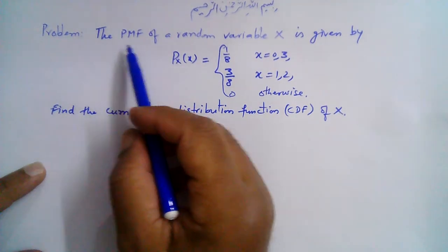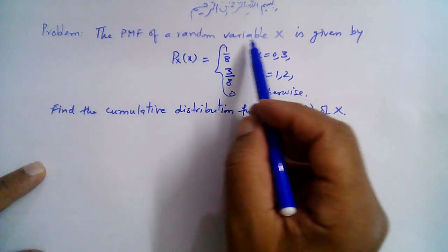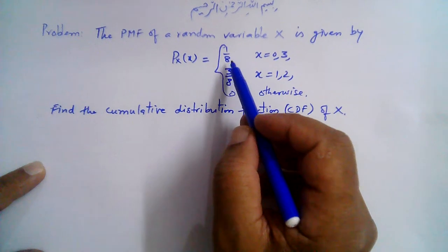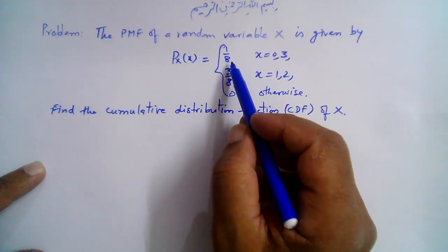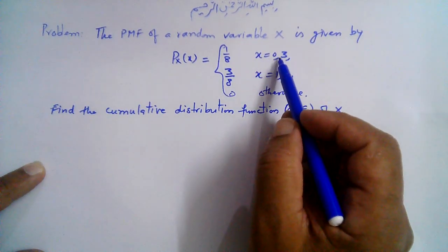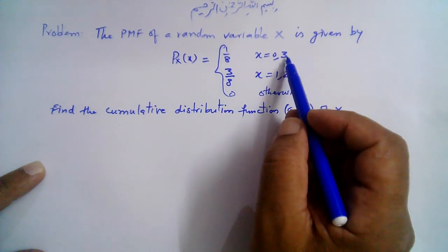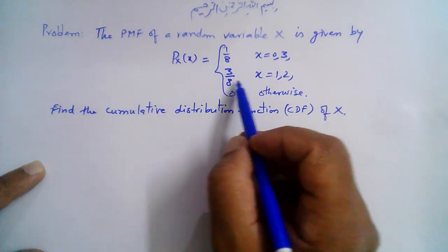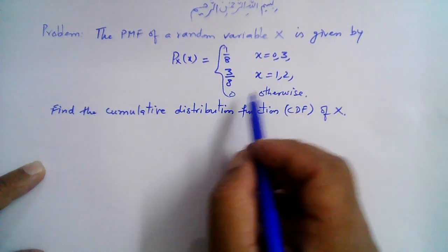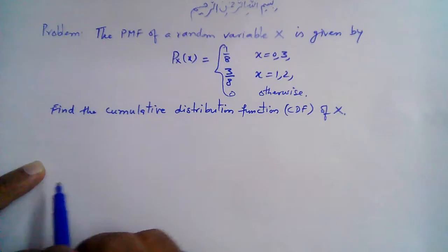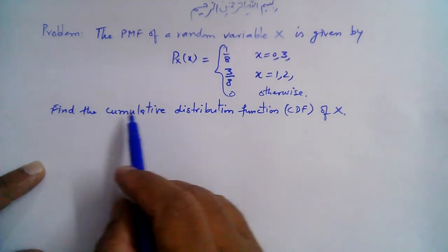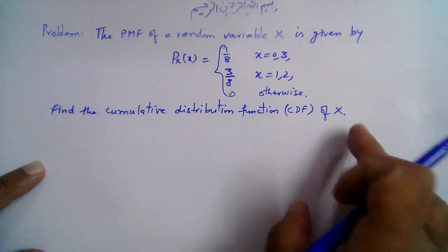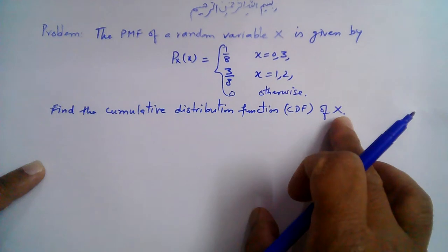Bismillahirrahmanirrahim. The PMF of a random variable X is given by P_X(x) = 1/8 when X = 0 or 3, and P_X(x) = 3/8 when X = 1 or 2, and 0 otherwise. Find the cumulative distribution function (CDF) of X.